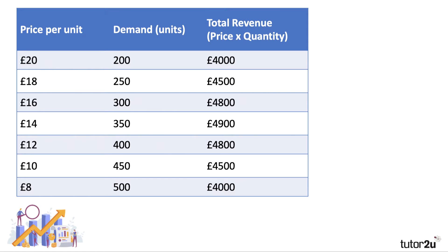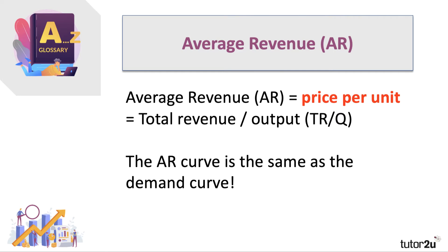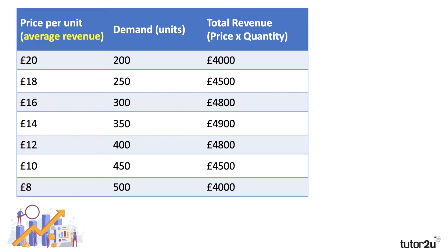The second concept is average revenue — revenue per unit. As I've just said, revenue per unit is also known as the price per unit. We simply take total revenue divided by output: TR divided by Q gives us price per unit. In fact, the price per unit is essentially the demand-price relationship, so the average revenue concept and curve is the same as the demand curve. From the table, the first column is average revenue, the second is demand at a given price, and the third column is total revenue — price times quantity.